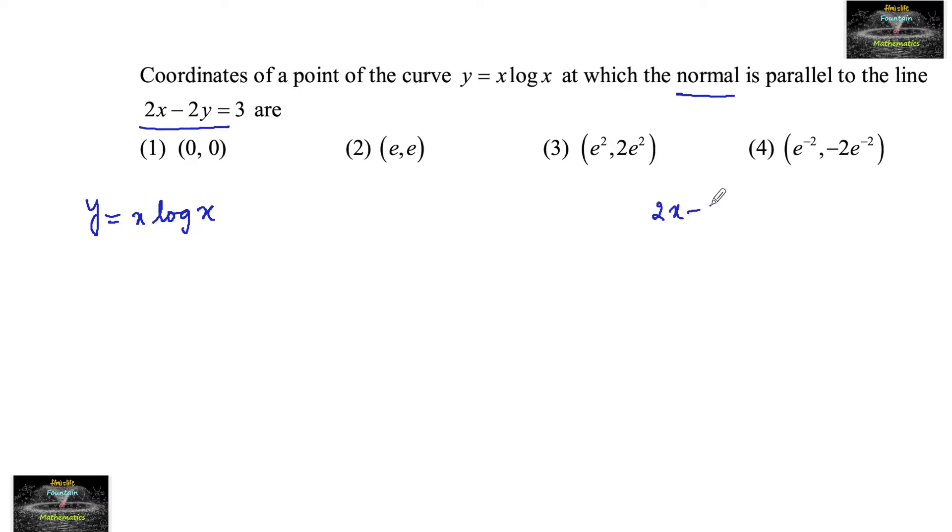The given line 2x minus 2y minus 3 equals 0 has slope minus a by b, that is minus 2 by minus 2, which equals 1. This implies that the slope of the normal is also equal to 1 because the normal is parallel to the line.